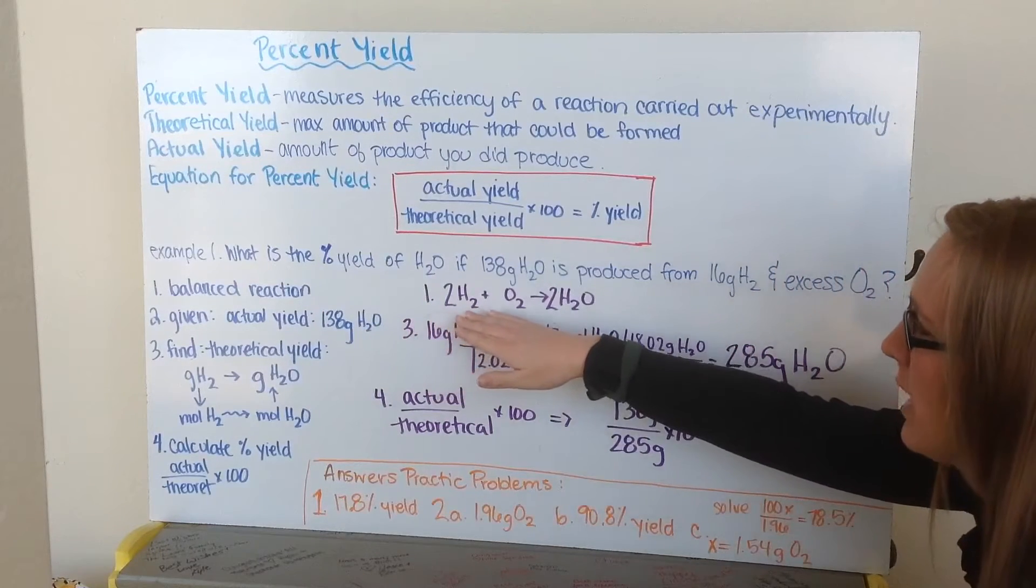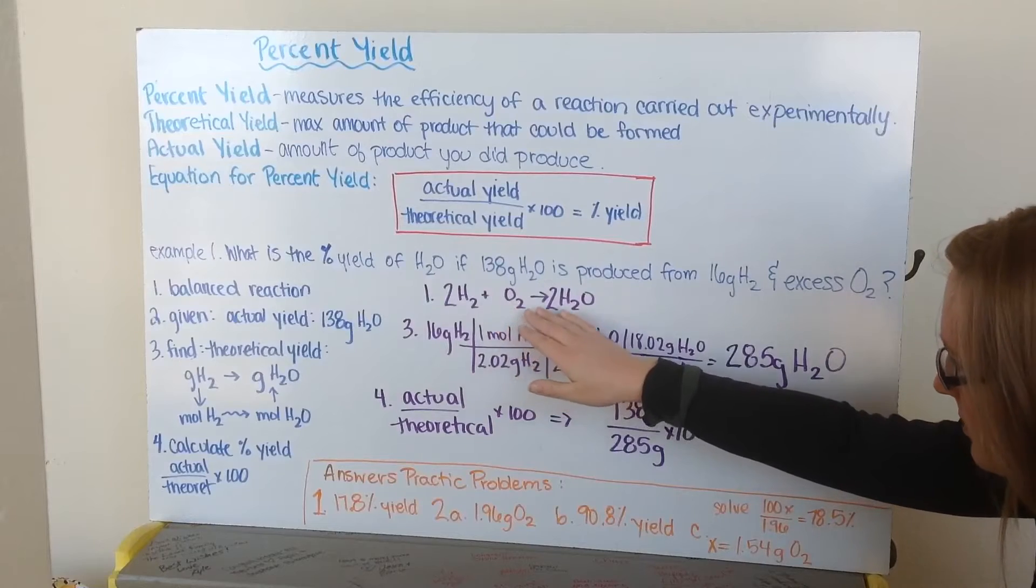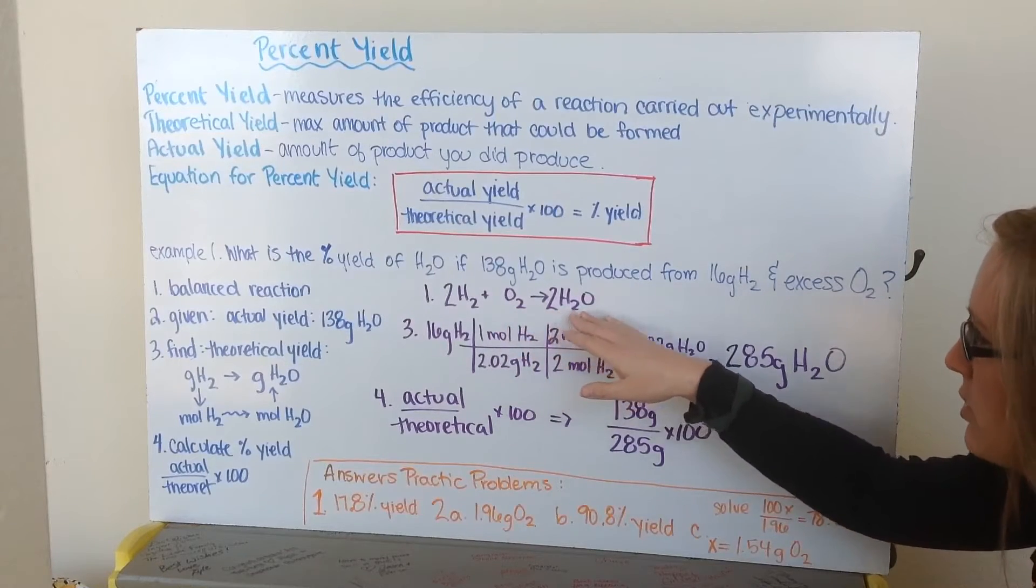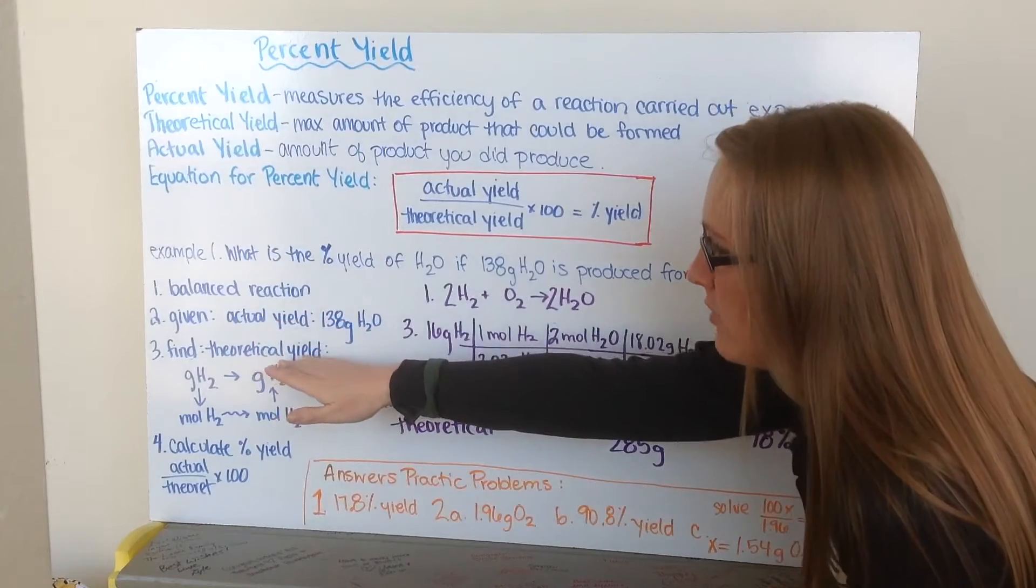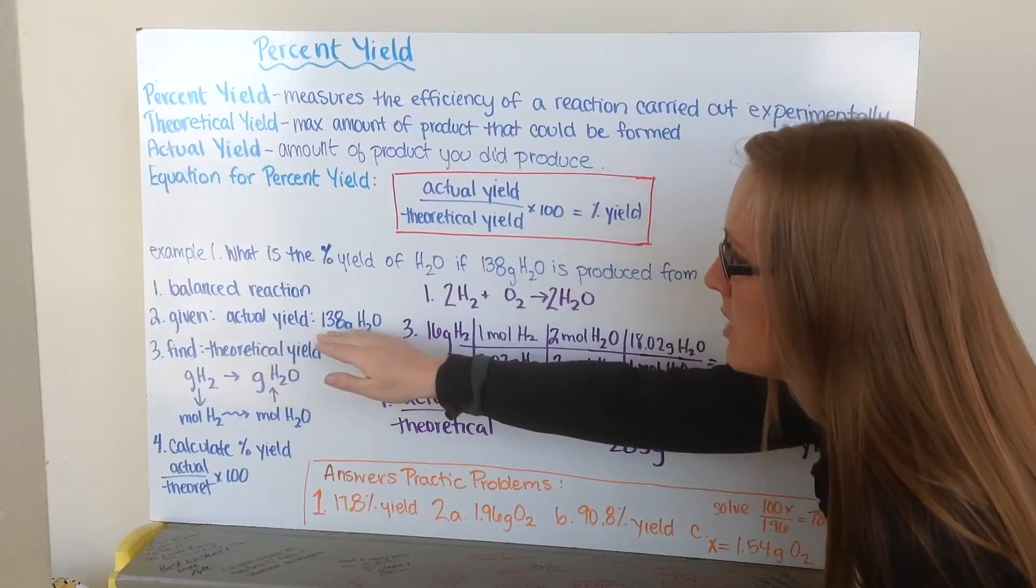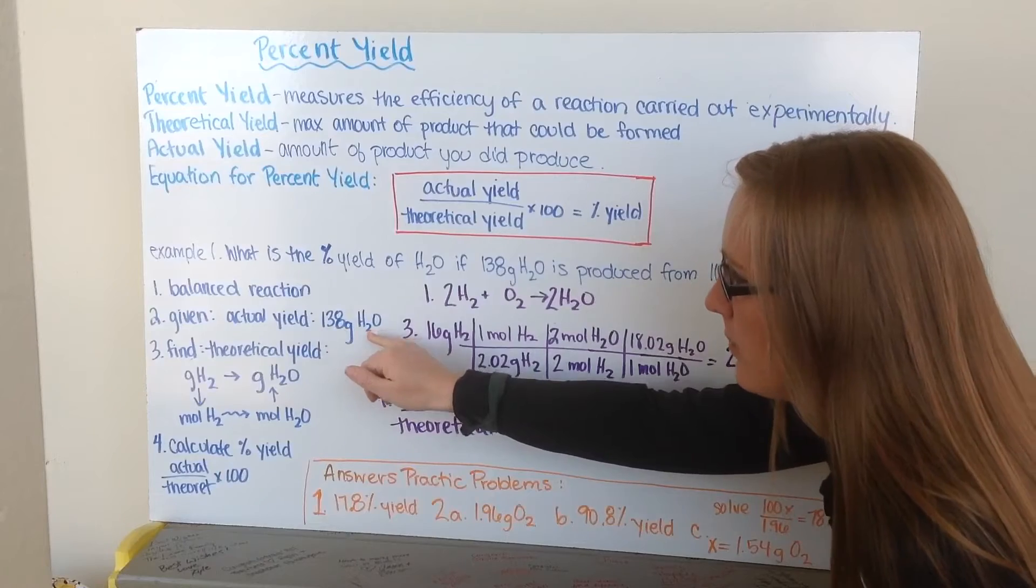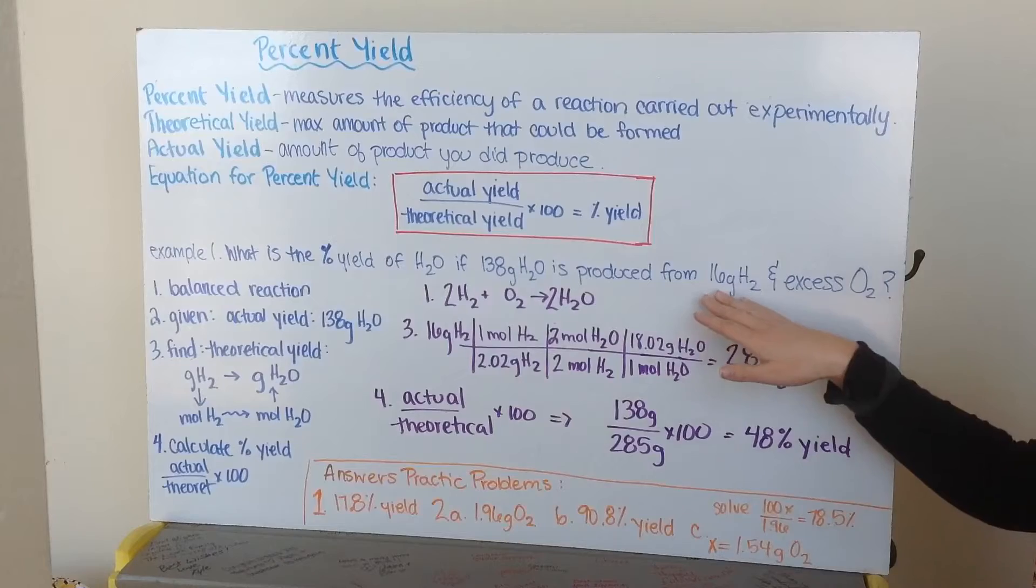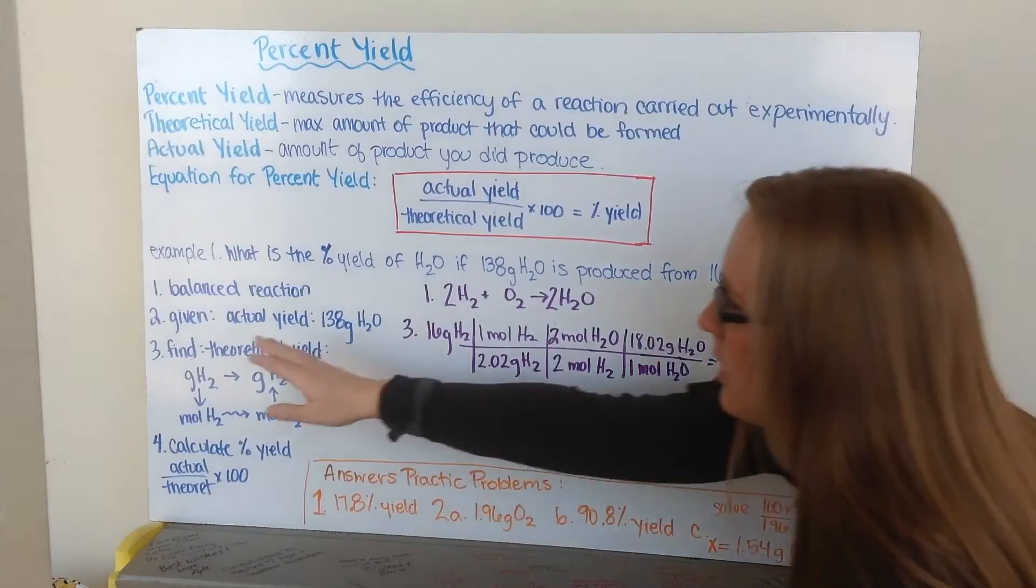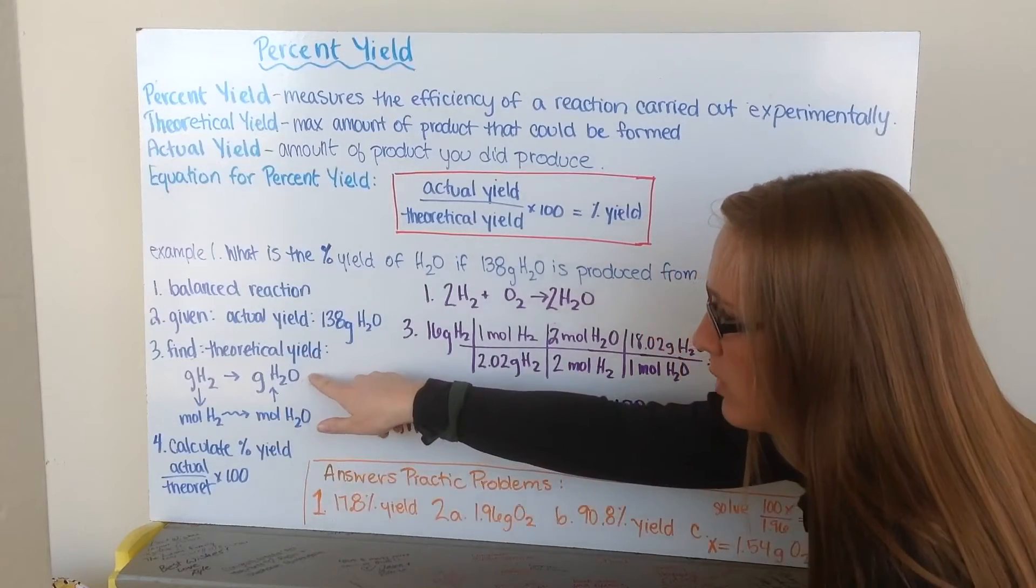I have 2H2 plus 1O2 yield 2H2O. Then I need to know my given and what I'm trying to find. Well, I'm told my actual yield is 138 grams of water. But I need to figure out what my theoretical yield was. And that's by converting my given value of 16 grams of hydrogen to figure out how many grams of water was produced.